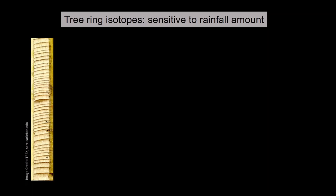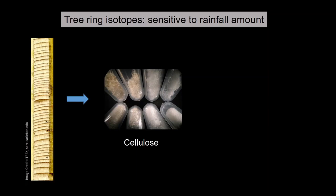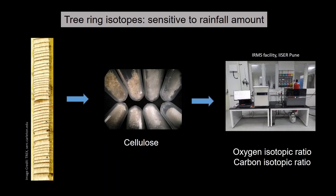Beyond ring width and density, we can also measure the isotopic composition of material within a tree ring. Cellulose is extracted from individual rings and, using sophisticated instruments such as mass spectrometers, the oxygen and carbon isotopic composition of cellulose from each ring is measured. This provides a time series of oxygen isotopic composition for every year, which can be used to reconstruct past rainfall variability.